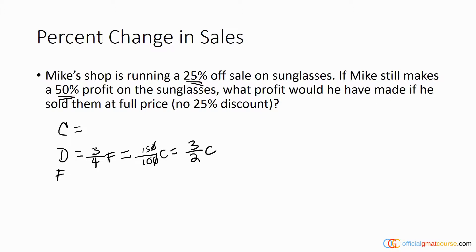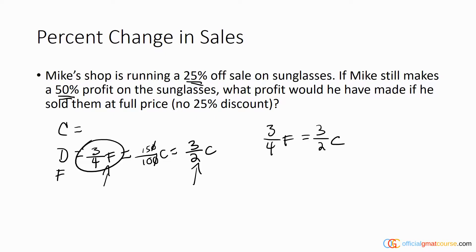So I know the discount price equals three quarters of the full price, and I also know it equals three halves of the cost. I can now set up a formula: three fourths of F equals three halves of C, since both expressions equal the value of the discount price.